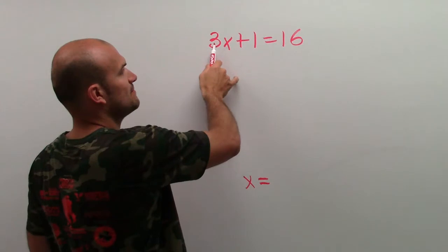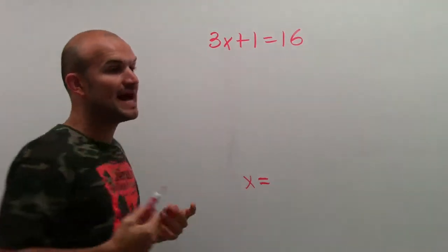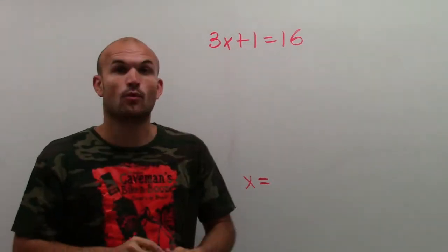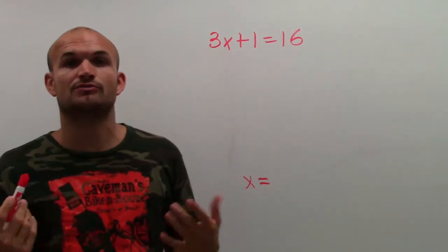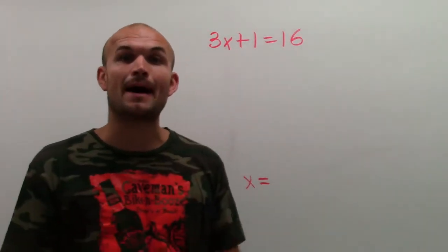Here, you can see I have x being multiplied by 3, and x being added by 1. So again, like one-step equations, what we're going to do is we're going to use inverse operations, which means the opposite operation.